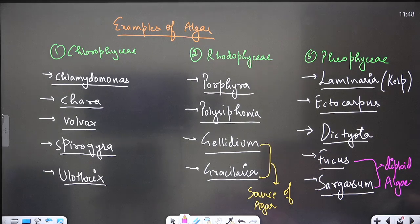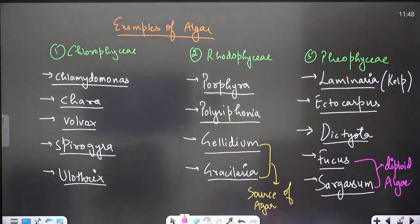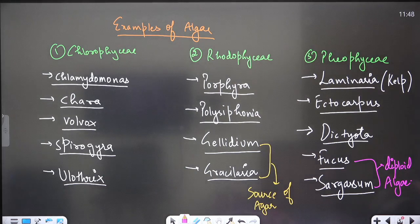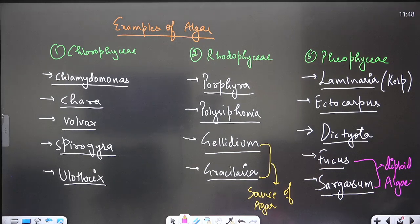These are the most important examples of Chlorophyceae, Rhodophyceae, and Phaeophyceae that you need to remember. After this, we are going to discuss the importance of algae.